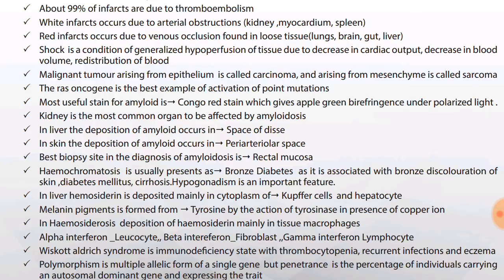Hemochromatosis usually presents as bronze diabetes — it is associated with bronze discoloration of skin, diabetes mellitus, and cirrhosis. Hypogonadism is an important feature. In liver, hemosiderin is deposited mainly in the cytoplasm of Kupffer cells and hepatocytes.